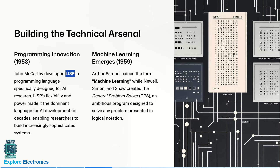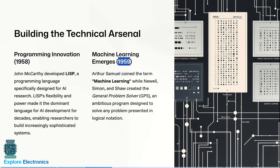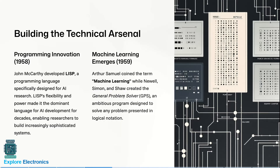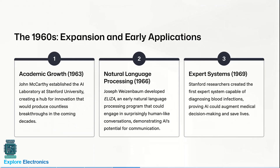specifically designed for AI research. Because of its flexibility and power, LISP became the dominant language for AI development for decades, enabling researchers to build increasingly sophisticated systems. In 1959, Arthur Samuel coined the term 'machine learning,' while Newell, Simon, and Shaw created the General Problem Solver, an ambitious program designed to solve any problem presented in a logical notation.